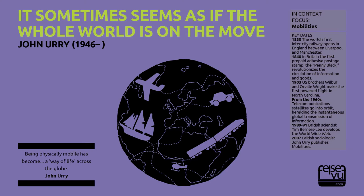Key Dates. 1830: The world's first intercity railway opens in England between Liverpool and Manchester. 1840: In Britain, the first prepaid adhesive postage stamp, the Penny Black, revolutionizes the circulation of information and goods. 1903: US brothers Wilbur and Orville Wright make the first powered flight in North Carolina. From the 1960s, telecommunications satellites go into orbit, heralding the instantaneous global transmission of information. 1989–91: British scientist Tim Berners-Lee develops the World Wide Web. 2007: British sociologist John Urry publishes Mobilities.